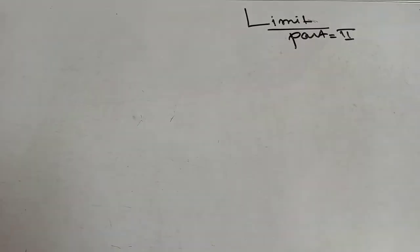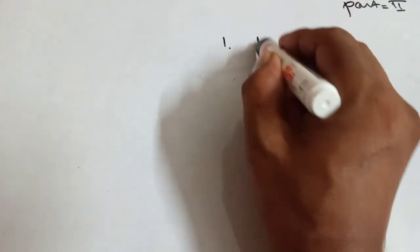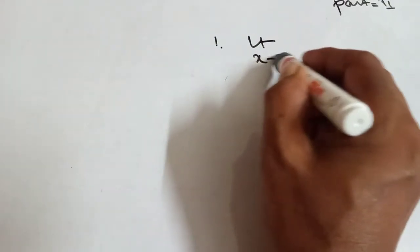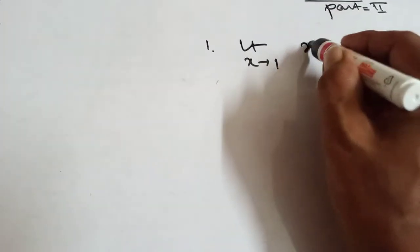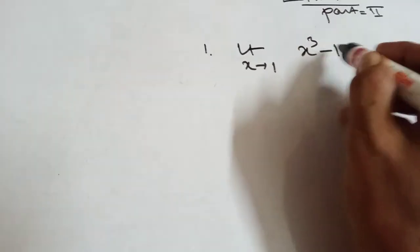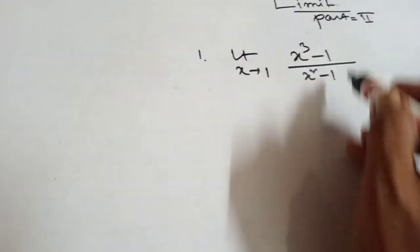Limit part 2. We have limit x tends to 1 of x cube minus 1 by x square minus 1.